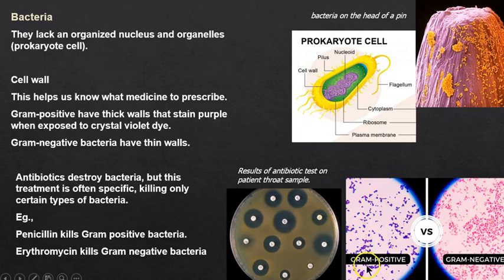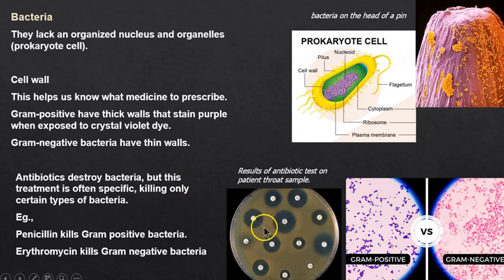This matters clinically. If you're sick and we do a throat culture and put it on a petri plate, you'll see a halo — that means whatever is in the white pad is killing the bacteria. If it's a penicillin gram-positive swab, we know we're going to put this patient on penicillin or a penicillin derivative.